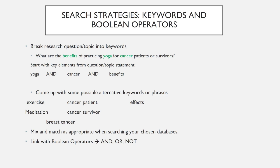First, obviously you will want to pull out the key concepts of your research question or thesis statement. Here, for example, yoga, cancer, and benefits are the top level concepts. However, there is never one perfect string of keywords in looking for information on nuanced topics like this. You never know the exact phrases used by authors and researchers, so it is important to diversify your search phrases. Brainstorm and come up with synonyms, alternatives, and related phrases for your top level keywords. Then it is pretty much a case of mixing and matching keywords and trying several searches that will help capture as much information on your topic as possible.